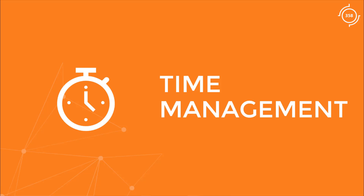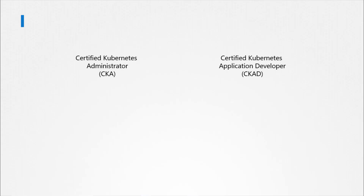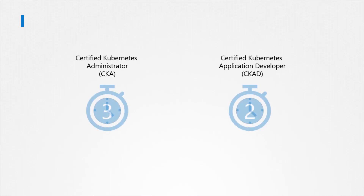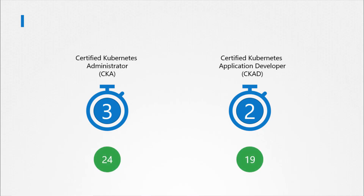This is applicable to all practical exams of this kind. As of this recording, you get two or three hours to complete the Kubernetes certification exams. The duration of the administrators exam is three hours and the application developers exam is two hours. You have 24 questions in the administrators exam and 19 in the application developers exam. That is not sufficient to complete all the questions, so it is important to manage your time effectively to pass the exams.